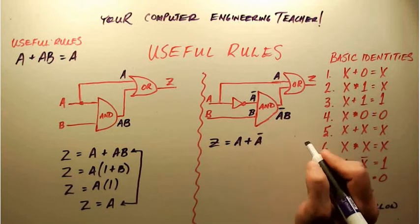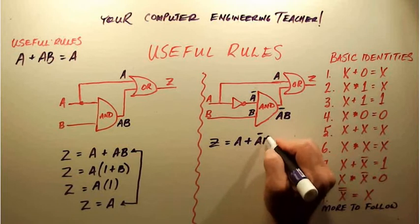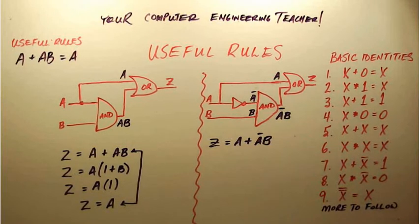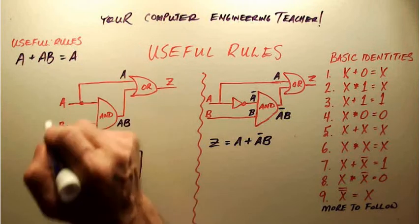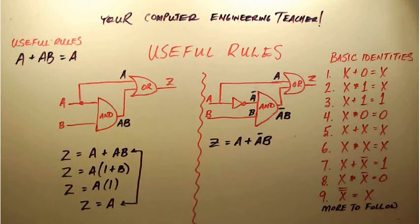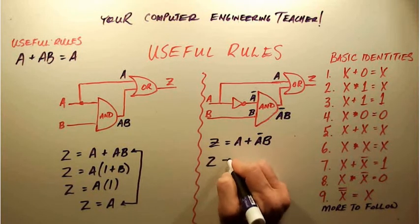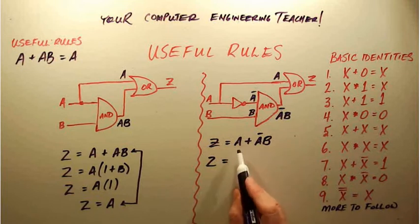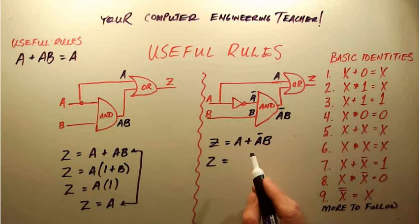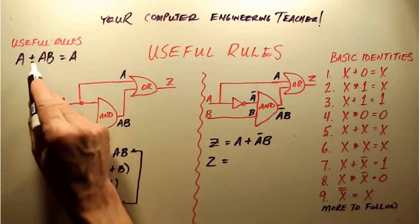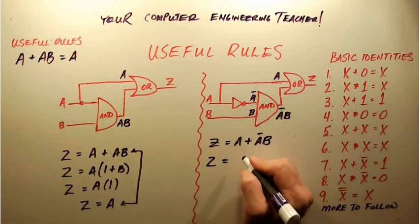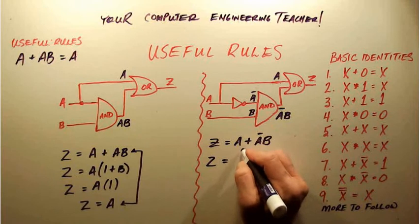Now what we're going to do is we're actually going to use the useful rule that we listed and figured out over here to actually simplify this one down. So watch carefully. What we're going to do is we're going to say, well anywhere where we have A and where we have inputs A and B, really that's the same as A + AB. So actually I'm going to take this here.